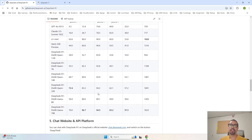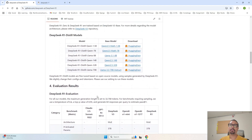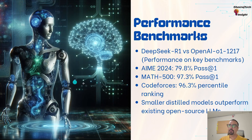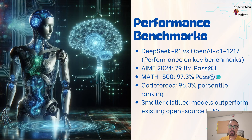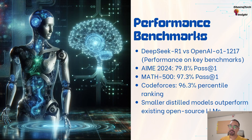Here you can also see the distilled model evaluations. MATH 500 consists of 500 challenging math problems testing various areas of mathematics, and the pass-at-one score indicates the percentage of problems the model solved correctly on its first attempt. Codeforces is a competitive programming platform where programmers solve algorithmic challenges, with a ranking system based on performance in contests. The Codeforces benchmark here refers to the ranking or percentile achieved by DeepSeek R1 when solving programming problems on that platform.